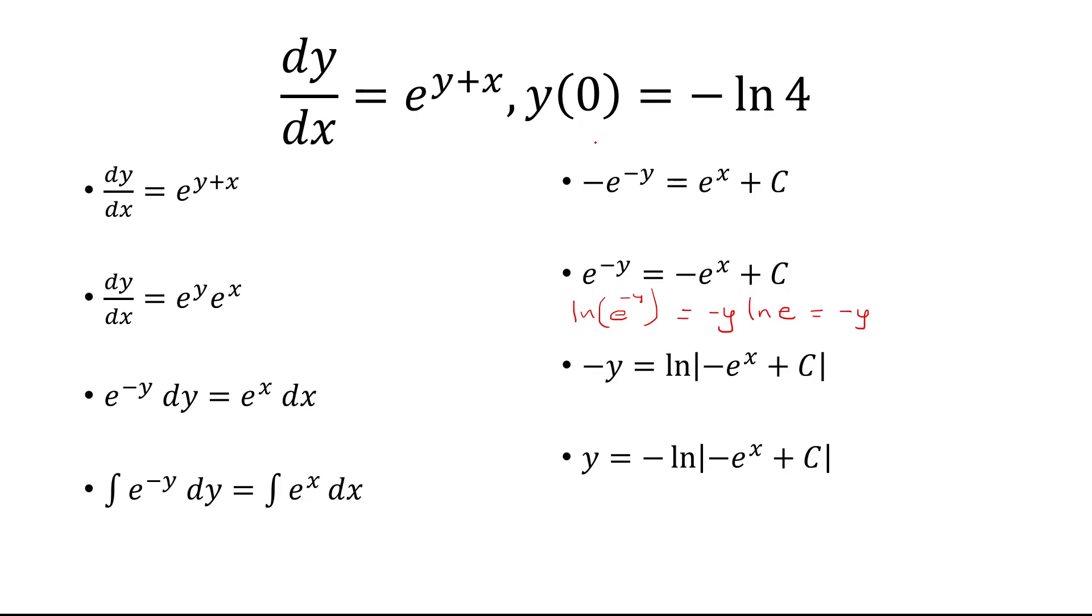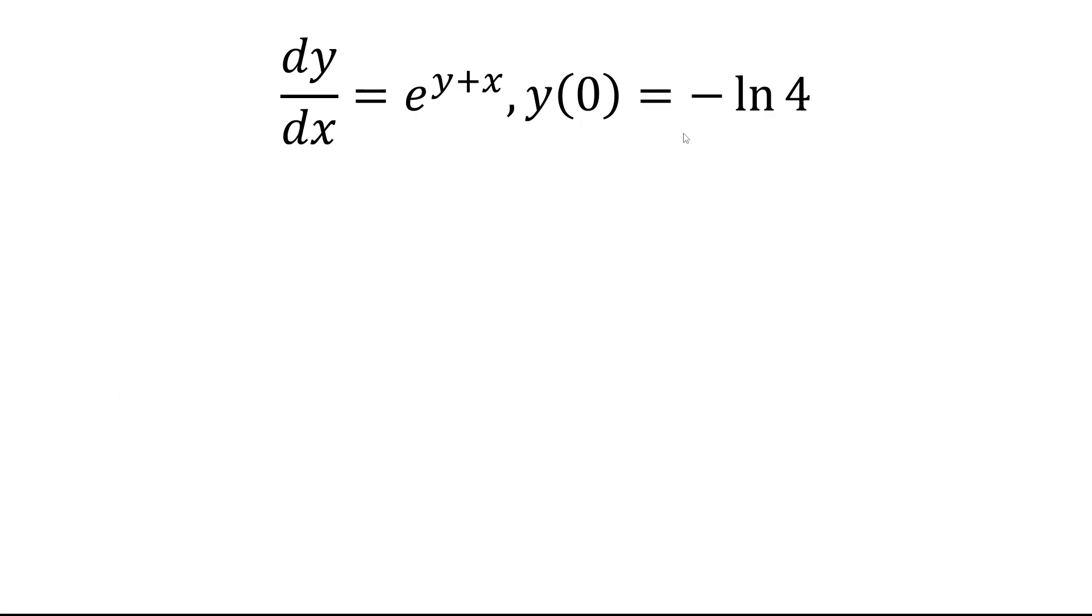Finally, we have to plug in the initial condition. So when x is 0, y is negative ln of 4.